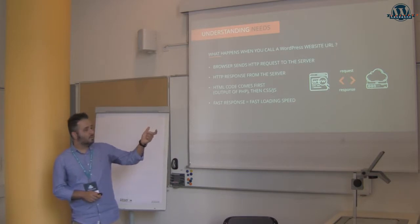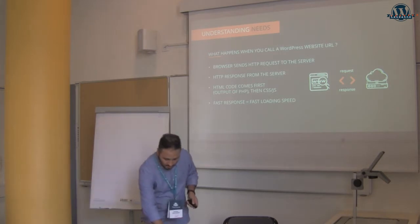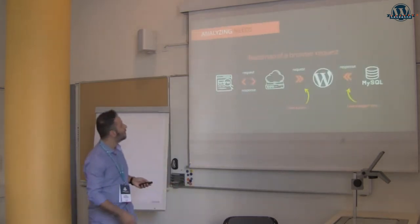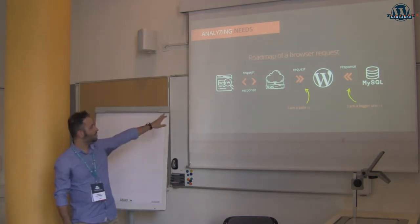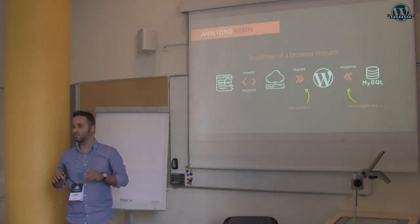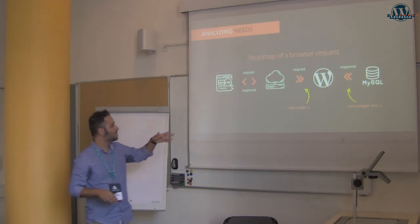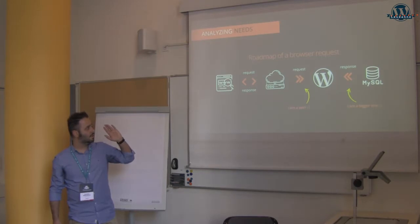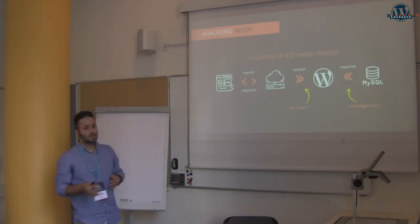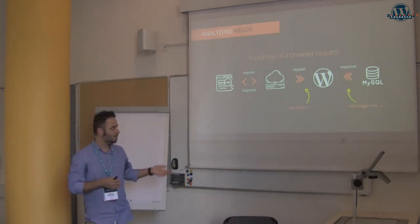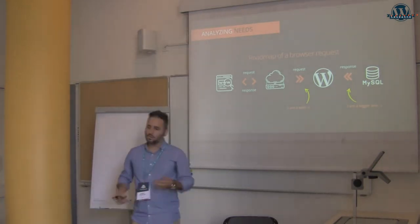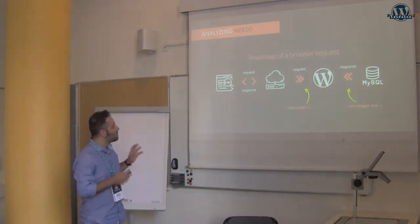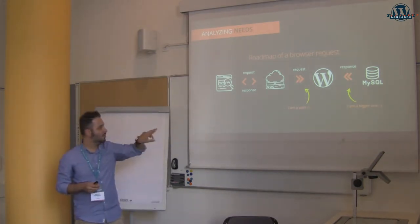We need to optimize things so they get back faster than the default installation. To do this, we will analyze the roadmap of a browser request. A browser request starts from the user's level — it comes from your browser when you type a WordPress website URL and hit enter. This request goes straight to the web server of the hosted website, and in order to be parsed back it needs to involve many technologies, including your CMS, PHP, and MySQL, which are big pain points that should be optimized to get a faster response back.